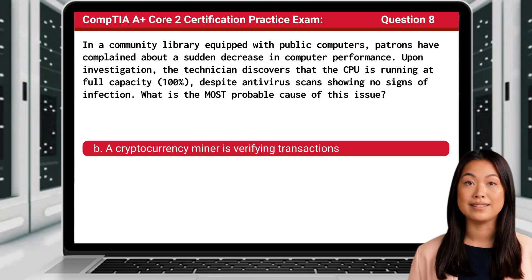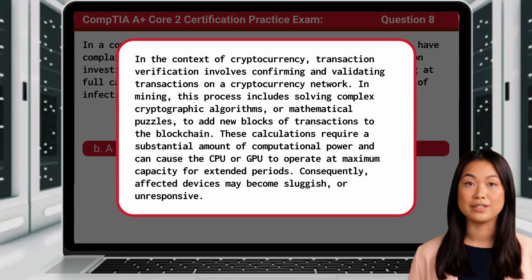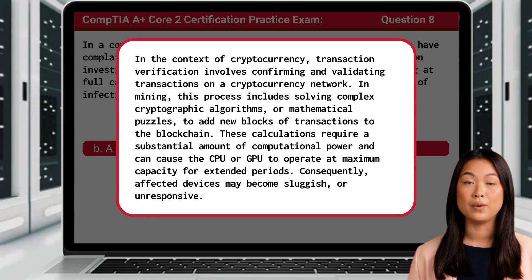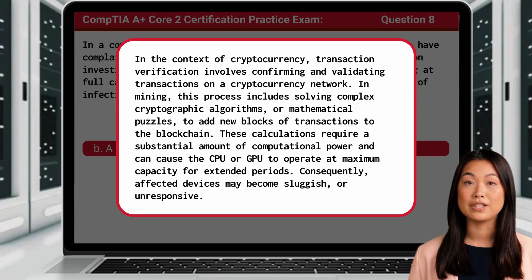The answer is B: a cryptocurrency miner is verifying transactions. In the context of cryptocurrency, transaction verification involves confirming and validating transactions on a cryptocurrency network. In mining, this process includes solving complex cryptographic algorithms, or mathematical puzzles, to add new blocks of transactions to the blockchain. These calculations require a substantial amount of computational power and can cause the CPU or GPU to operate at maximum capacity for extended periods. Consequently, affected devices may become sluggish or unresponsive.